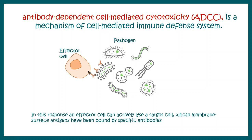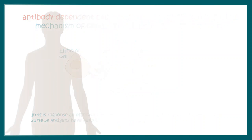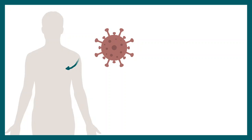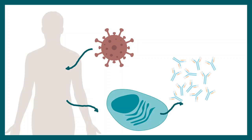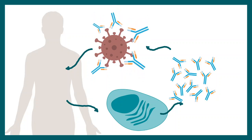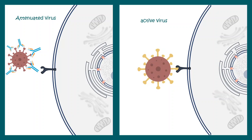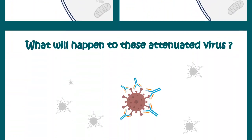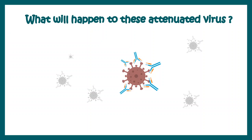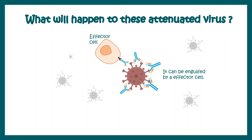Now the question is: what are the effector cells and in which context is ADCC really important? Imagine we are infected by a virus. Our body would fight back by producing antibodies against this virus, and these antibodies would potentially attenuate the virus or disable it from entering other cell types. This is basically a humoral immune response. Active virus can interact with a cell surface receptor and get entry inside the cell, but attenuated virus cannot enter because it is blocked by antibodies. Effector cells can recognize some portion of the antibodies and ultimately engulf the attenuated virus, thereby destroying it.